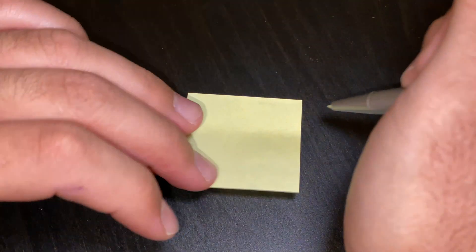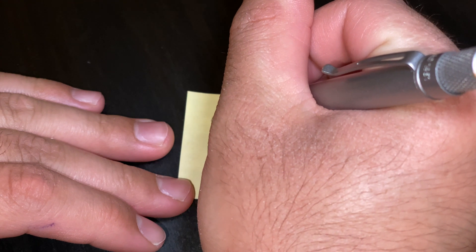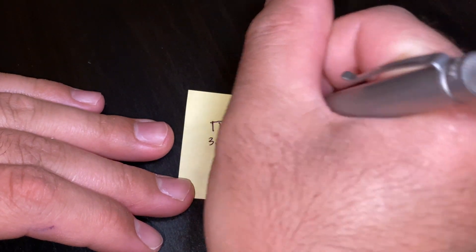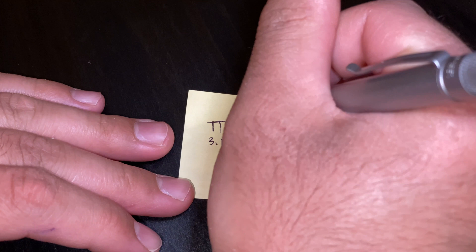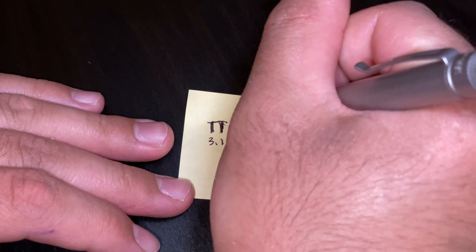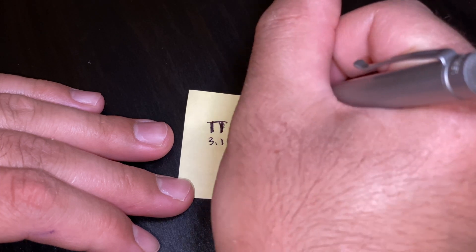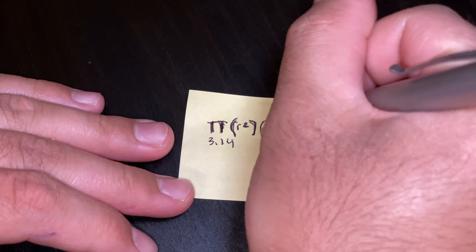In order to find the volume of an engine you need to first find the volume of a cylinder. So the formula for finding the volume of a cylinder is pi which is 3.14 times radius squared times height.